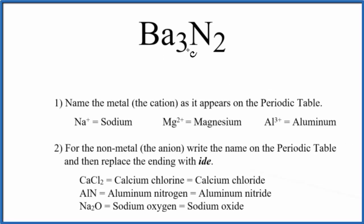To write the name for Ba3N2, we first need to realize we have an ionic compound. That's because we have a metal bonded to a non-metal. When we have a metal and non-metal bonded, we have an ionic compound.